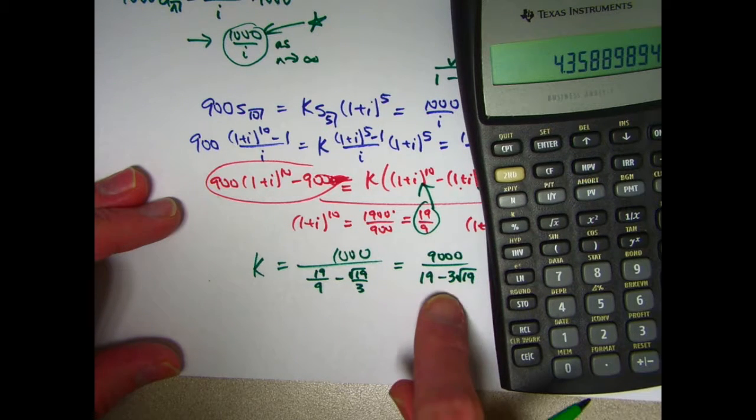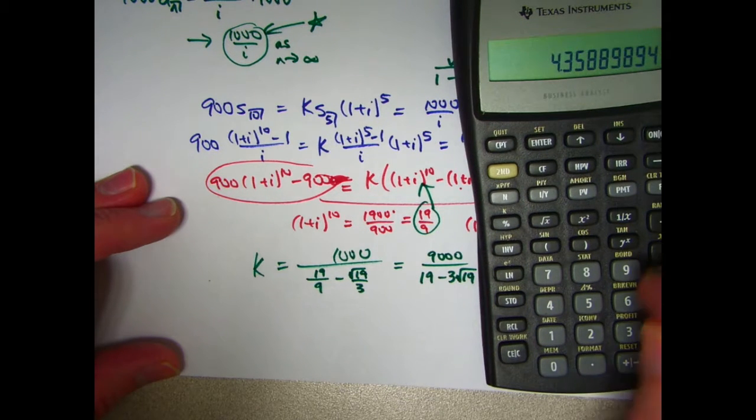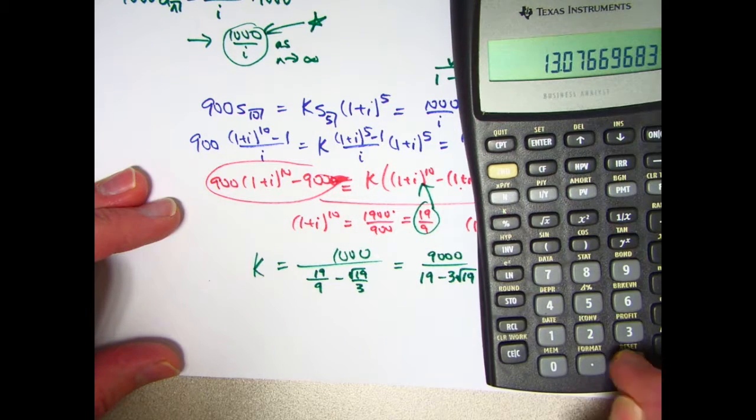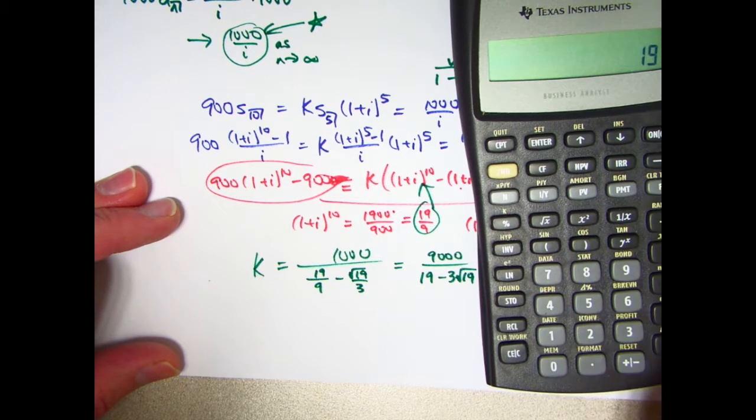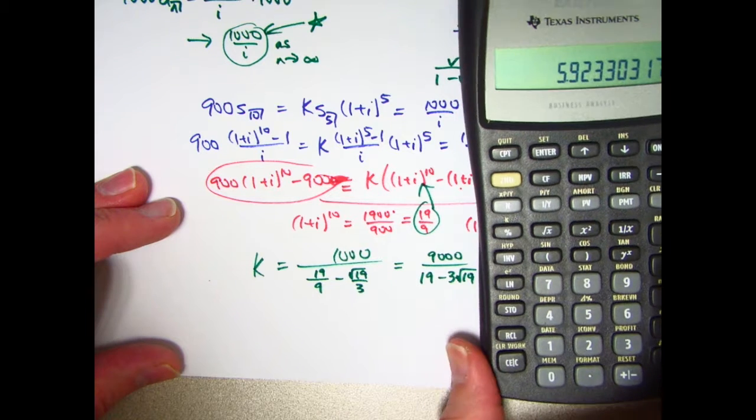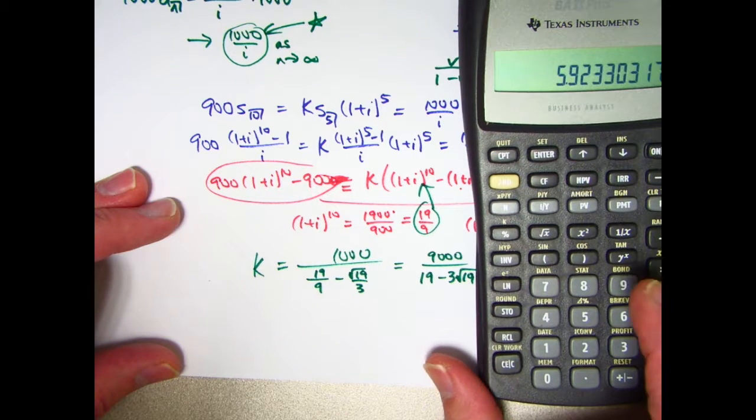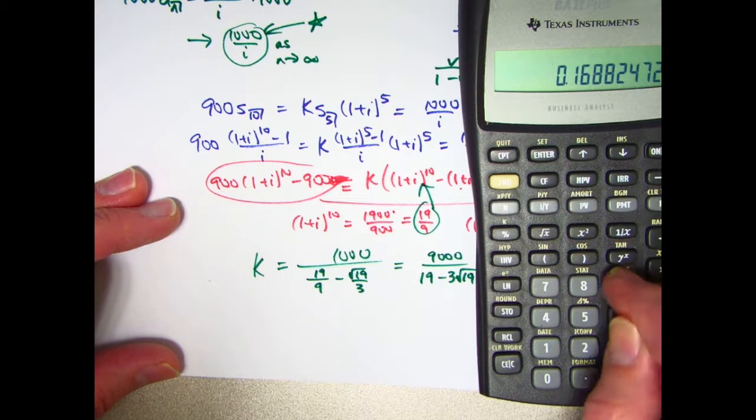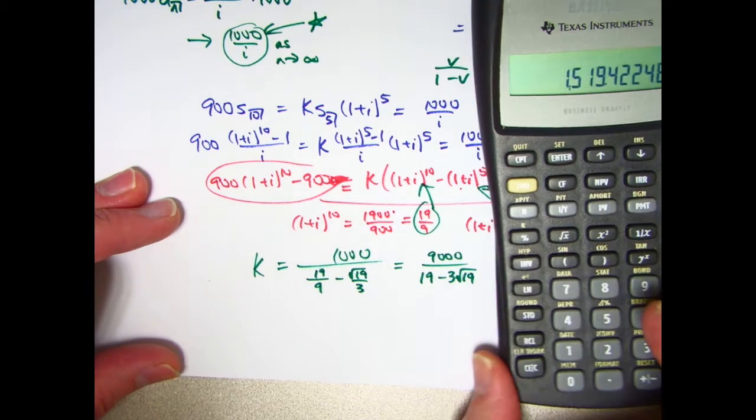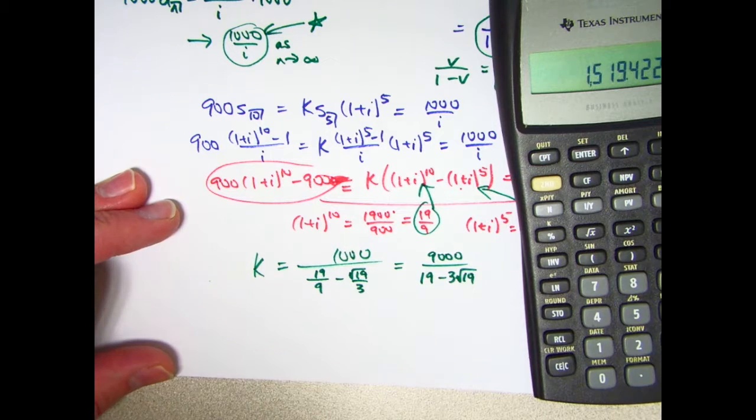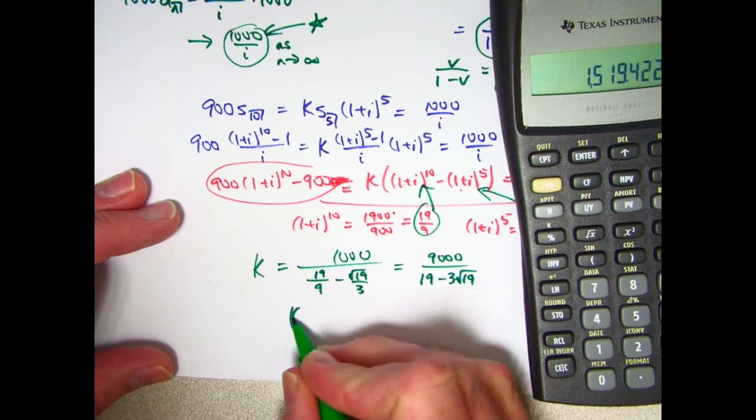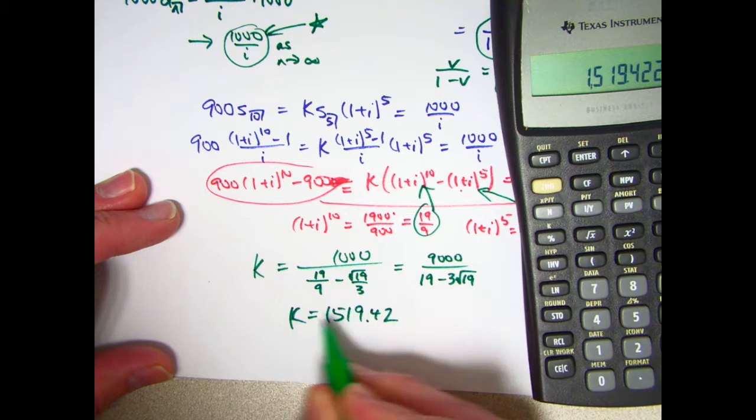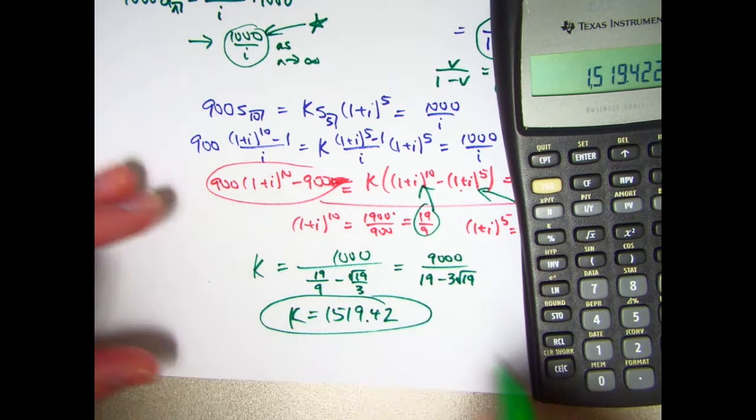Let me find the square root of 19 first. There's the square root of 19. Multiply it by 3. Subtract that from 19. So I'll go negative plus 19. Take 9,000 divided by that. So I'll take the reciprocal of this and multiply times 9,000. There we go. Looks like k is about 1519.42. And I'm double checking. Yes, that is the correct answer.